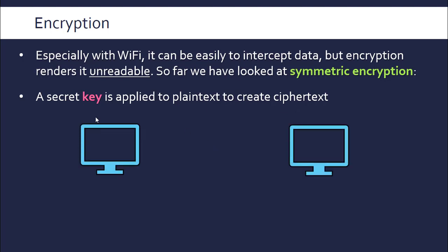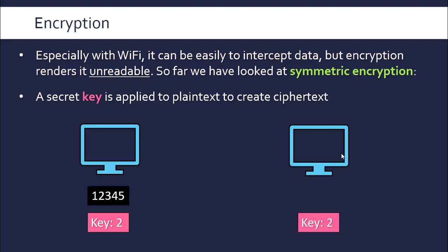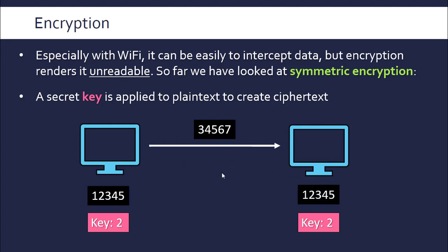We've got two parties in this communication — the sender and the receiver. The sender is trying to send plain text to the receiver and they've got a key of two, which means the receiver also needs to have the key of two. They need to know the secret key, so this key is kept secret just between these two people. Everyone else shouldn't have access to it. They apply this key to the plain text — one, two, three, four, five, six, seven — and can decrypt it when received because they know the key. This very sophisticated algorithm adds the key to the plain text; fortunately real algorithms are more complicated, but only these two people should know the secret key, which is integral to decrypting the data.